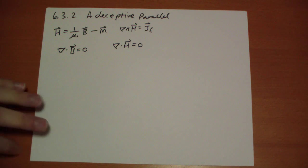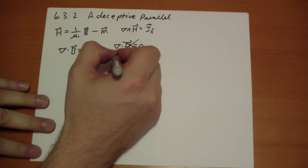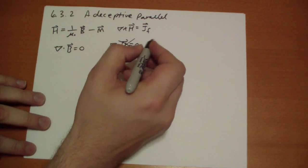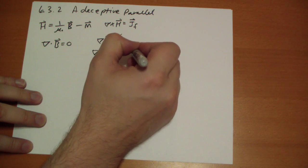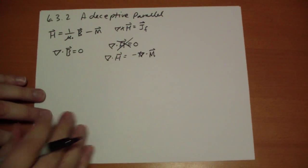And the bottom line is this is incorrect. The divergence of H is equal to divergence of that minus the divergence of the M vector.